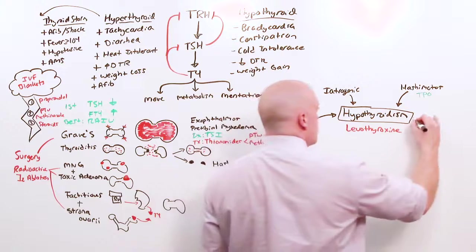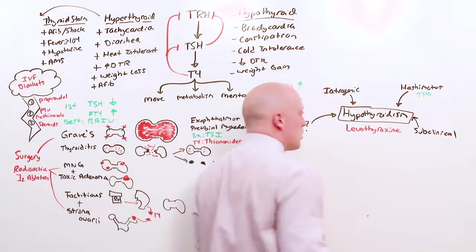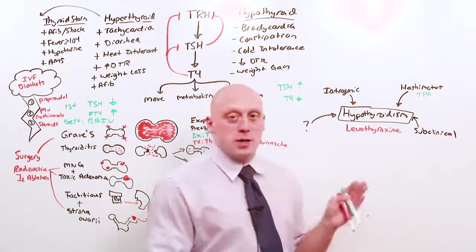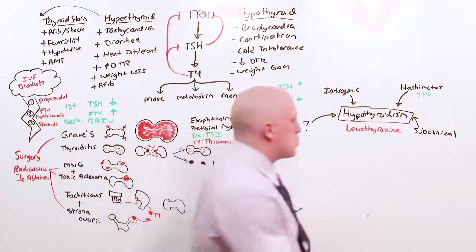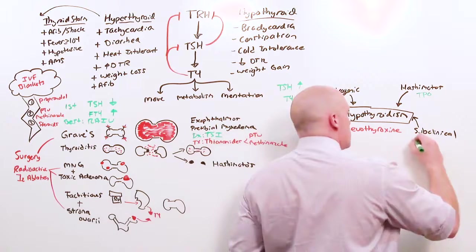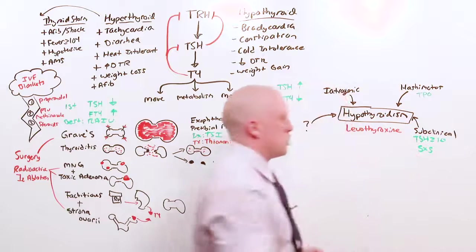The only time it does matter is in the condition called subclinical. Subclinical means the TSH is elevated but they have no symptoms. If you're going for 270, know that you do treat subclinical if the TSH is greater than or equal to 10, or there are symptoms of hypothyroidism, you begin treatment.